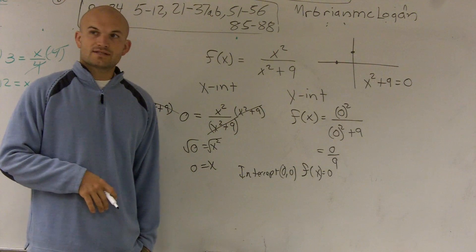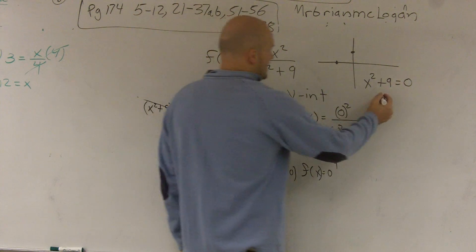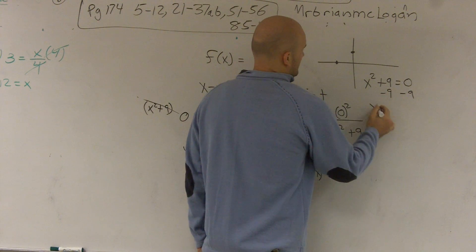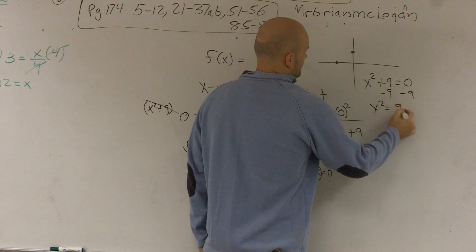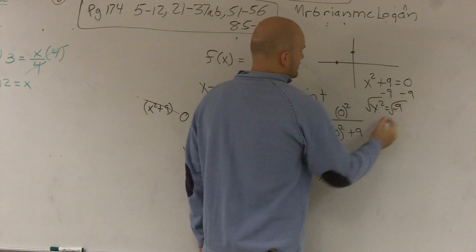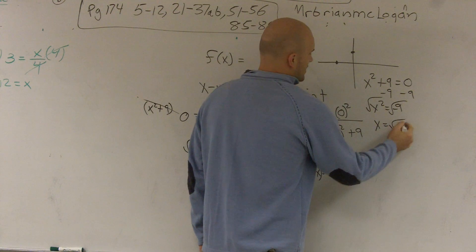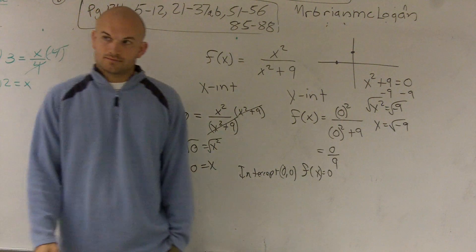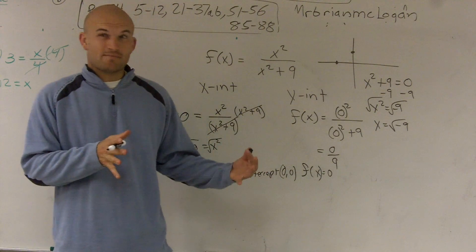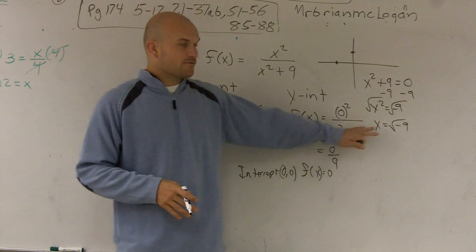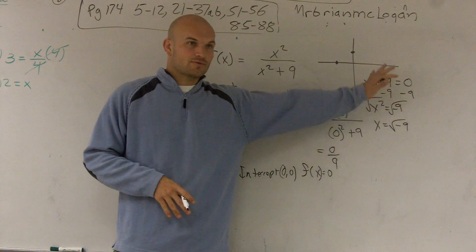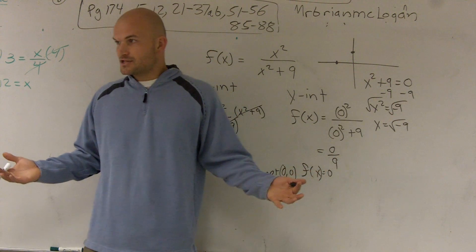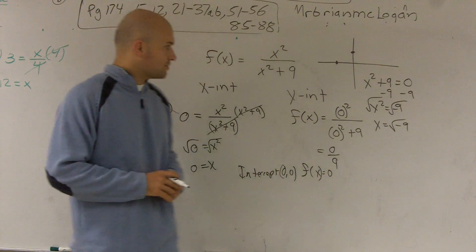So to solve for this, I subtract the 9. And when I take the square root, I have x equals the square root of negative 9. You cannot take the square root of a negative number, right? That's going to give us an imaginary asymptote. So therefore, there's not going to be a vertical asymptote. Since it's going to be an imaginary or a complex number, there is no vertical asymptote.